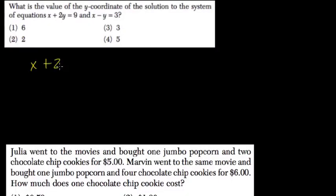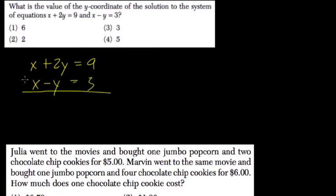What is the y value to this solution to the system? x plus 2y equals 9, and x minus y equals 3. Since the x's are equal here, I'm going to cancel them out by subtracting.